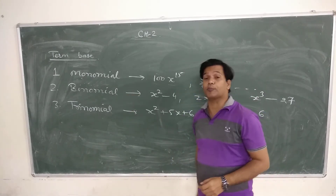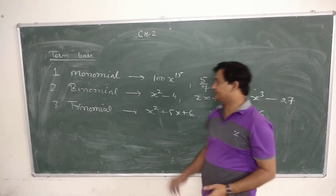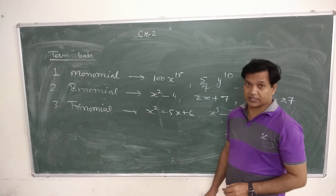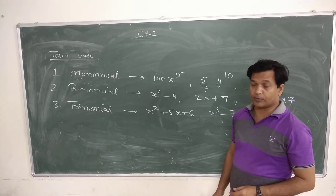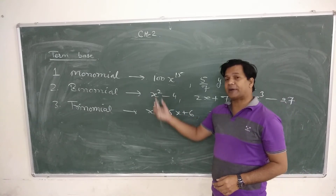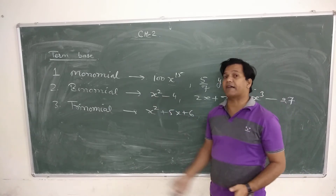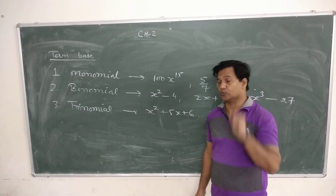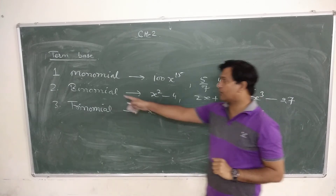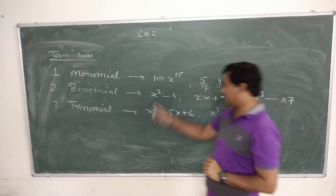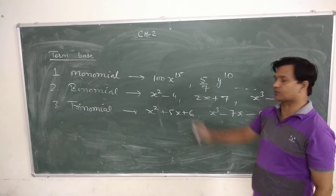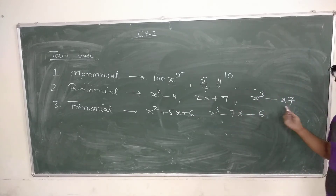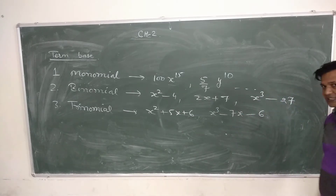If we are talking about binomial, there are two terms appearing in that polynomial. It doesn't matter what the power is — the number of terms should be 2. That type of polynomial is said to be binomial, like x squared minus 4, 2x plus 7, x squared minus 27, and so on.